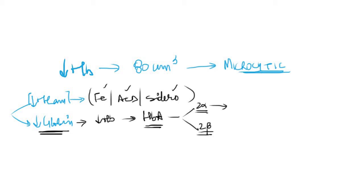The alpha chain has its genes called the alpha genes, and there are 4 of these alpha genes — 2 are located on the paternal 16th chromosome and 2 are located on the maternal 16th chromosome. So in total there are 2 alpha chains formed from 4 alpha genes on the 16th chromosome.